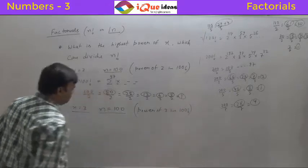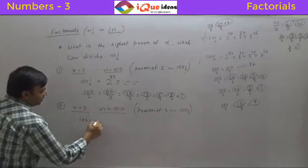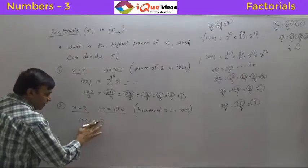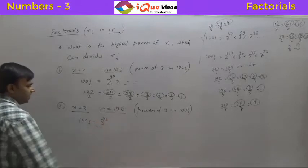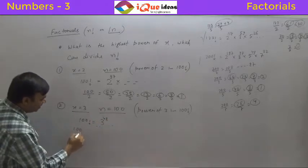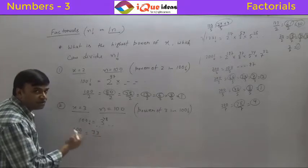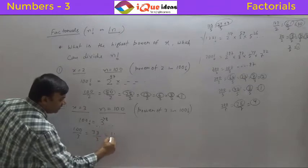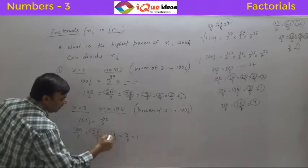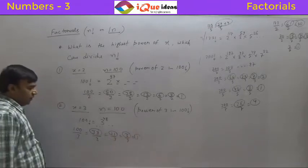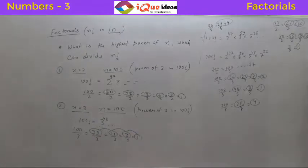Let's calculate the power of 3 in 100 factorial. Divide 100 by 3, we get 33 (taking only the integer part). Then 33 by 3 gives 11, then 11 by 3 gives 3, then 3 by 3 gives 1 — no further division possible. Adding: 33 plus 11 is 44, plus 3 is 47, plus 1 is 48. So the power of 3 in 100 factorial is 48.